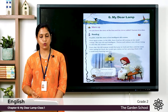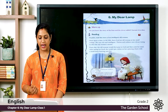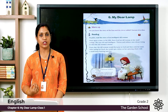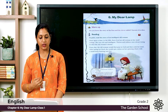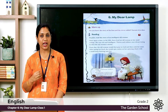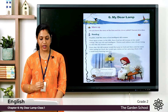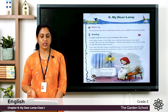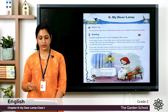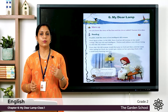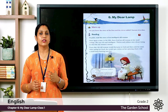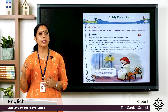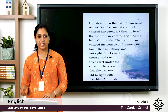Every day the old woman would first pray to God and then cook her meal. After eating, she would spin cotton on her spinning wheel with a small lamp burning near her. In olden days, people used a spinning wheel to make thread out of cotton or wool. This was her daily routine.